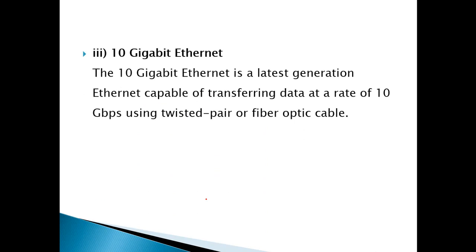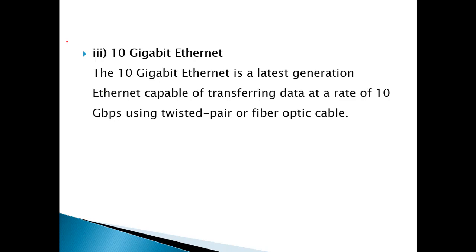The third type is 10 Gigabit Ethernet. 10 Gigabit Ethernet is the latest generation Ethernet capable of transferring data at the rate of 10 Gbps using twisted pair or fiber optic cables. It is 10 times faster than Gigabit Ethernet, and both twisted pair and fiber optic cables can be used with it.